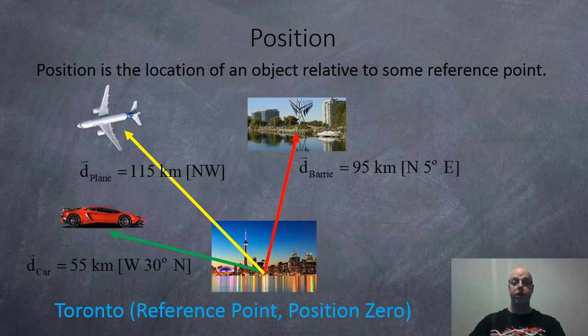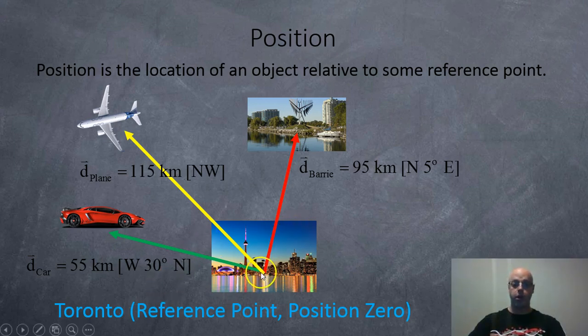Okay first of all position. Position is the location of an object relative to some reference point. So for example Toronto is a good reference point if you live in Ontario. Here we have a car which is 55 kilometers to the west and then 30 degrees to the north. Here we have a plane which is 115 kilometers northwest of Toronto. And then we have the city of Barrie which is 95 kilometers heading north and then come over 5 degrees towards the east. So these are all positions.